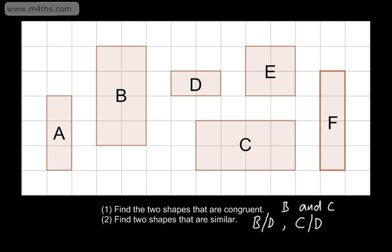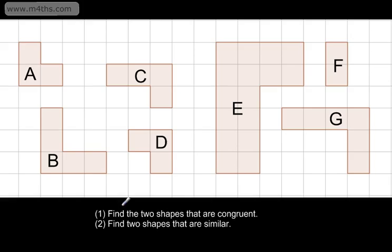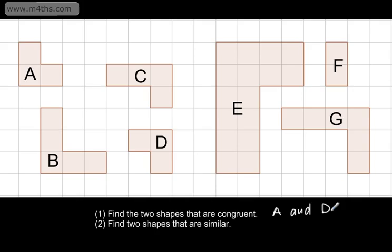Let's look at some more. In question one, we're asked to find the two shapes that are congruent — which two are identical? All of these look like Tetris blocks. It's going to be A and D. Again, it doesn't matter that D has been rotated; it would fit straight back onto A. So A and D are the congruent shapes — they are identical. You can use the word congruent however you like to pronounce it.